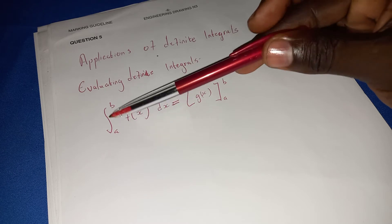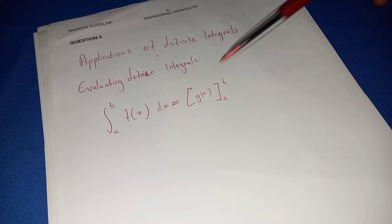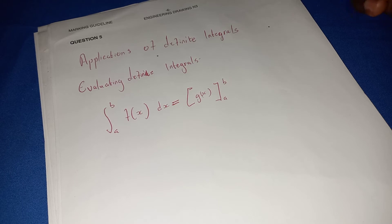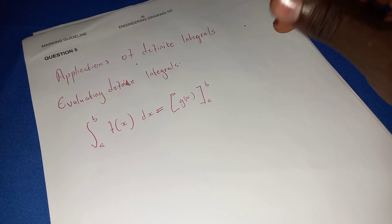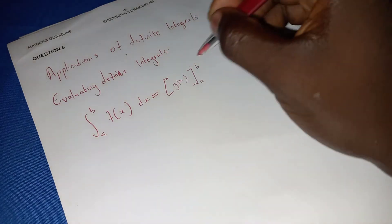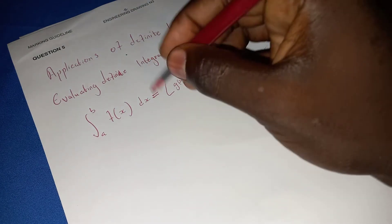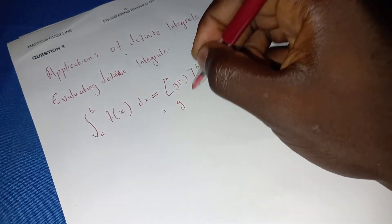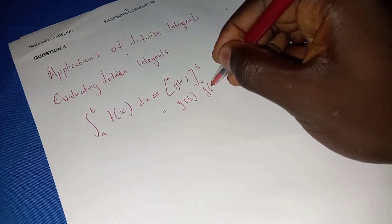For example, if you have the integral of f(x) over an interval from a up to b, the answer is found by integrating to get g(x). After integrating, you apply the values of a and b, so you evaluate g(b) minus g(a).